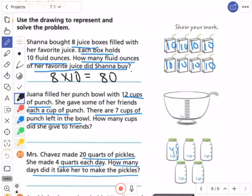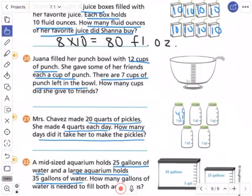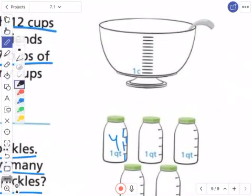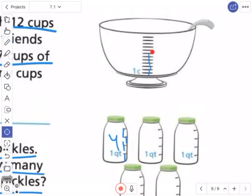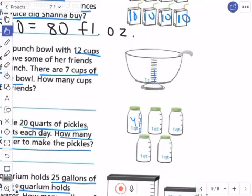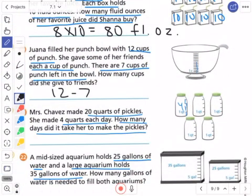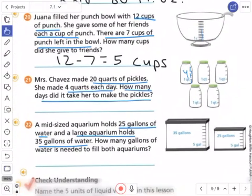Then number 20: Juana filled her punch bowl with 12 cups of punch, she gave some, now there's only 7 left. Well I would do this, I'm just going 1, 2, 3, 4, 5, 6, 7, and how many are left then? 1, 2, 3, 4, 5. I'm gonna do my real equation just to double check it then: 12 minus 7, because the 7 is one of the parts, what's the other part? 12 minus 7 equals 5 cups. That works.